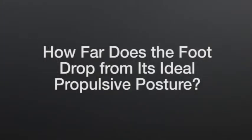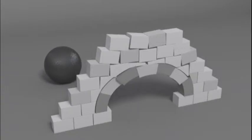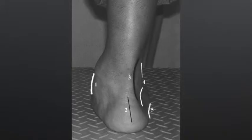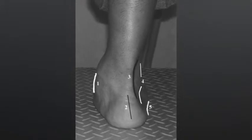He compared the existing dropped posture to the ideal propulsive posture of the foot. How far does the foot drop from its ideal propulsive posture? So a very high arch may drop enough to weaken its structure while remaining high arched in relation to the floor. Thus, the foot posture index as it is currently used is flawed.